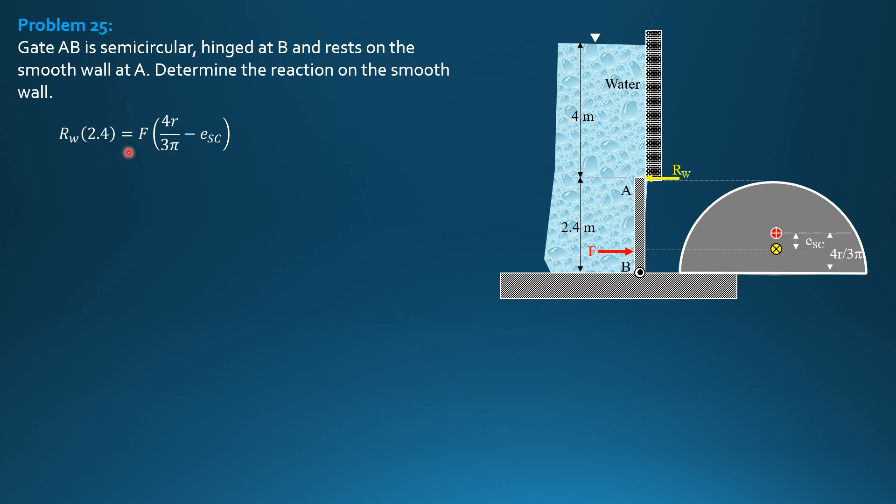Now, let's solve for F pressure at the centroid, 9.81 times barred H. By the way, barred H is the distance from the centroid to the vertical distance to the water surface. So, 4 plus 2.4 is 6.4 minus 4R over 3 pi. So, it's 9.81, barred H, 6.4 minus 4 times radius 2.4 over 3 pi. Then, the area of the semicircle is pi over 2 or 0.5 pi radius square, 2.4 square. So, F is 477.65 kilonewtons.